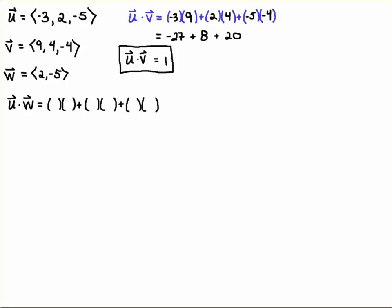If you tried to multiply, let's say, u dotted with w, you can already start to anticipate something's going to go wrong here, because u has three components, three entries here. But w only has two.